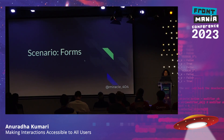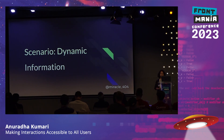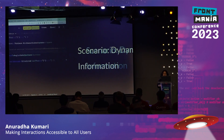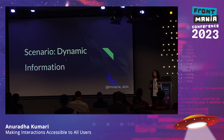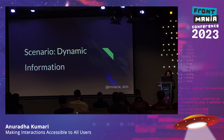The third scenario is dynamic information, which I already covered in the forms error example. I kept it separate because dynamic information can be anywhere — alerts, modals. We want those announcements to reach the user, and that's where we use live regions. We also need to be mindful not to make everything a live region, as it would interrupt the user.